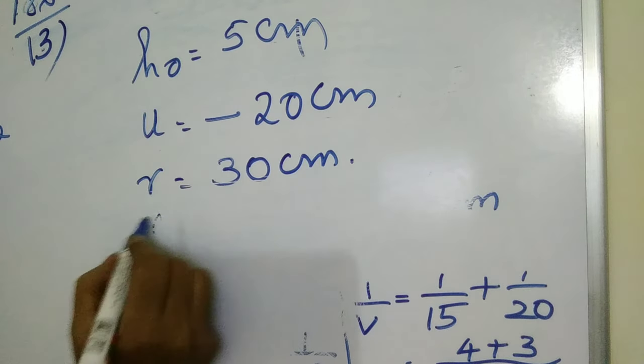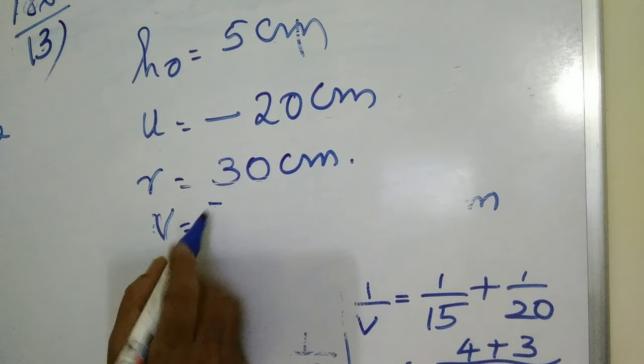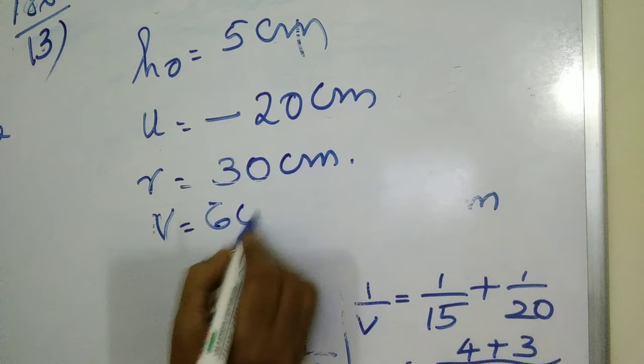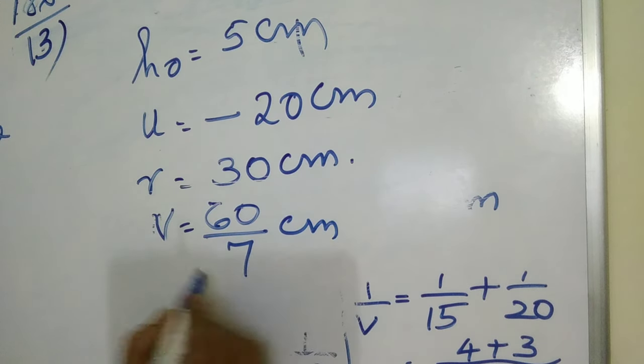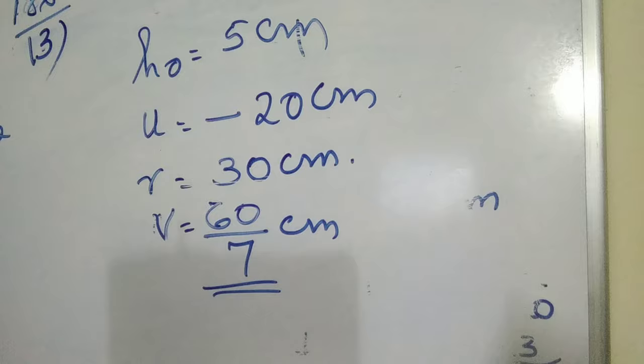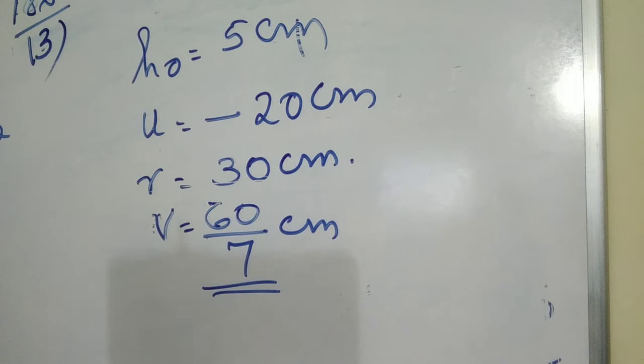V equals 60 by 7. That is the value of V. Here, the position is at a distance of 60 by 7 cm.